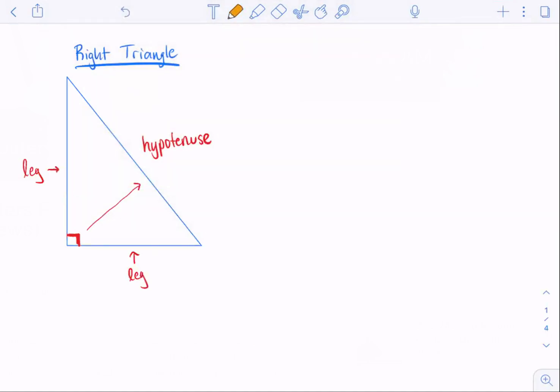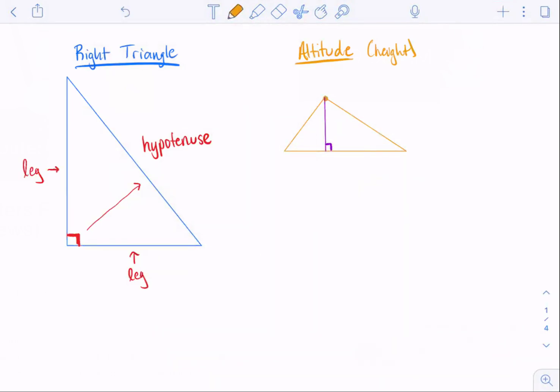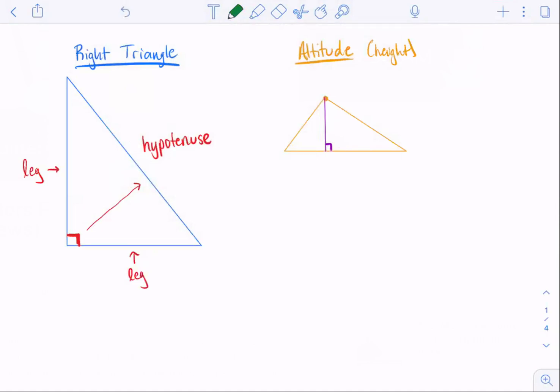Very important that you know that about a right triangle for this particular topic. Now another thing I want to recall is what an altitude is. Some of you know altitude as height which is correct because an altitude is a height. So if I have a triangle and I want to draw an altitude it has to go from a vertex and then it has to create a 90 degree angle with its opposite side.